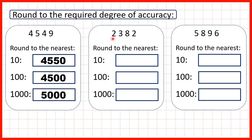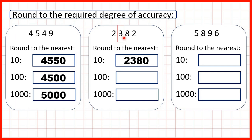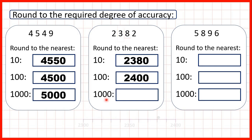Now, let's round two thousand, three hundred and eighty-two. To the nearest ten, we find the place value and underline the digit to the right. We need to round down, so the eight stays the same, digits to the left stay the same, so we get two thousand, three hundred and eighty. To the nearest hundred, we find our hundreds digit, and we can see that we're rounding up, so that's two thousand, four hundred. And to the nearest thousand, we find our thousands digit, and this time we need to round down, so the digit stays the same, so we get two thousand.